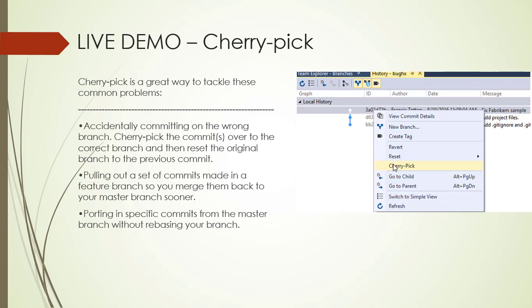Cherry pick takes a commit from somewhere else and plays it back wherever you are right now. Because it introduces the same change with a different parent, Git builds a new commit with a different ID. That commit is now applied to the master branch and committed there. Cherry pick behaves just like a merge — it works in the same way — but the difference is that it simply picks only the particular commit that you require.